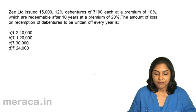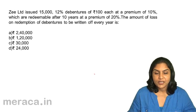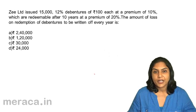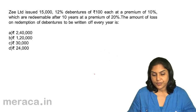A: 2,40,000. B: 1,20,000. C: 30,000. And D: 24,000.